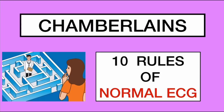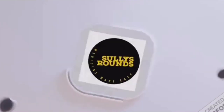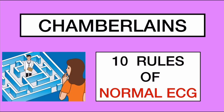Hi friends, I'm Dr. Ilyas and welcome to another episode of Sully's Hour. Many of my friends have told me that learning ECG is difficult. Actually, learning ECG is not difficult, but one should learn to read ECG in a systematic manner, because even experts in cardiology can make mistakes if they don't go through ECG systematically. It is easy to label an ECG as abnormal, but it is difficult to say that an ECG is normal with confidence. By applying Chamberlain's rules, we can confidently state that an ECG is normal. In this video, I shall explain the common measurements in ECGs followed by Chamberlain's 10 rules.